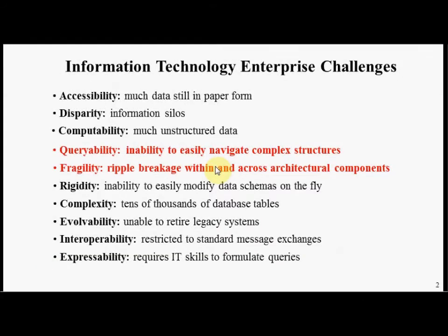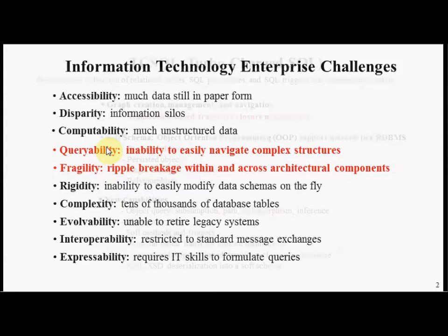There are a number of challenges in information technology. In today's presentation we're going to talk about two of them. Something called queryability, the inability to easily navigate complex structures. The second being the notion of fragility. Oftentimes in an enterprise system whenever you make a change to one layer of the architecture you get this ripple effect where you break other layers.